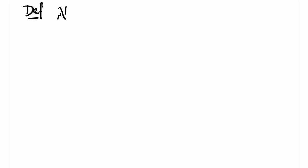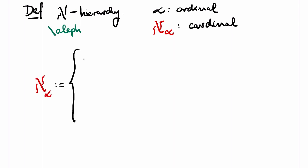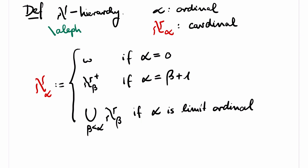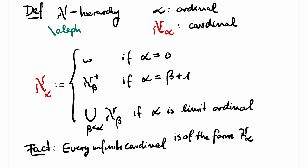Now comes some important notation, the so-called aleph hierarchy, to denote cardinals. For every ordinal alpha, we write aleph alpha for the cardinal defined as follows. Aleph alpha is omega if alpha is 0. It is the successor cardinal of aleph beta if alpha is the ordinal successor of beta. And it is defined as the union of aleph beta for all beta smaller than alpha if alpha is a limit ordinal. So aleph 0 and omega are the same thing. We typically use aleph 0 if we want to stress that we are counting something and we are using omega if we want to stress that we have an ordinal. It is not so difficult to show that every infinite cardinal is of the form aleph alpha for some ordinal alpha.